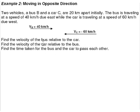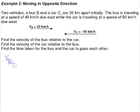So find the velocity of the bus relative to the car. As per what we have discussed in the previous examples, when we are talking about the velocity of the bus relative to the car, this is how we write the notation — velocity of the bus relative to the car — which means that you are the car looking at the bus. The formula is: velocity of the bus relative to the car is equal to the velocity of the bus minus the velocity of the car.